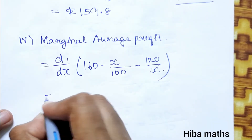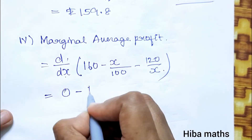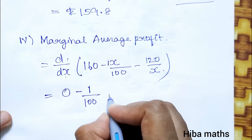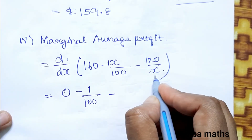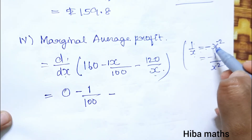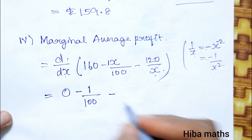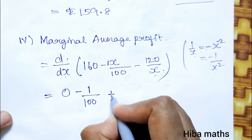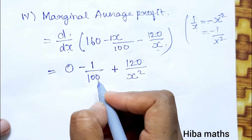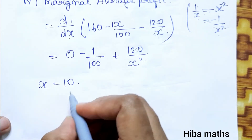Differentiating with respect to x: the constant 160 gives 0, minus x/100 gives -1/100, and differentiating -120/x gives +120/x². So the marginal average profit = -1/100 + 120/x².